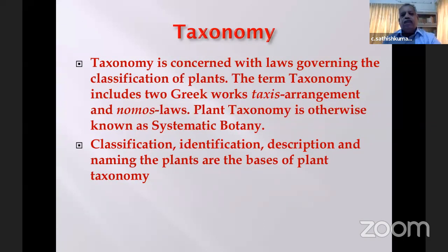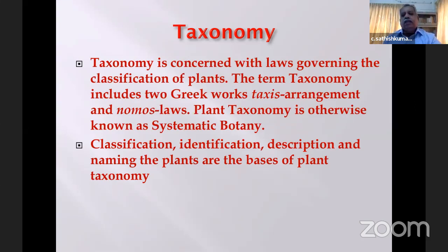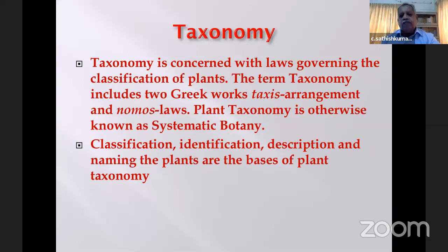Otherwise we will be in real trouble — like the biblical phenomenon of the Tower of Babel, when people forgot each other's languages and it created chaos and confusion. So taxonomy is actually a branch of science which helps us arrange plants in a proper way so that we can understand them better and make use of them for human welfare. Nomos in Greek means laws or rules, and taxis means arrangements. So plant taxonomy is actually the arrangement of plants. The basic function of taxonomy is classification, identification, description, and naming of plants.